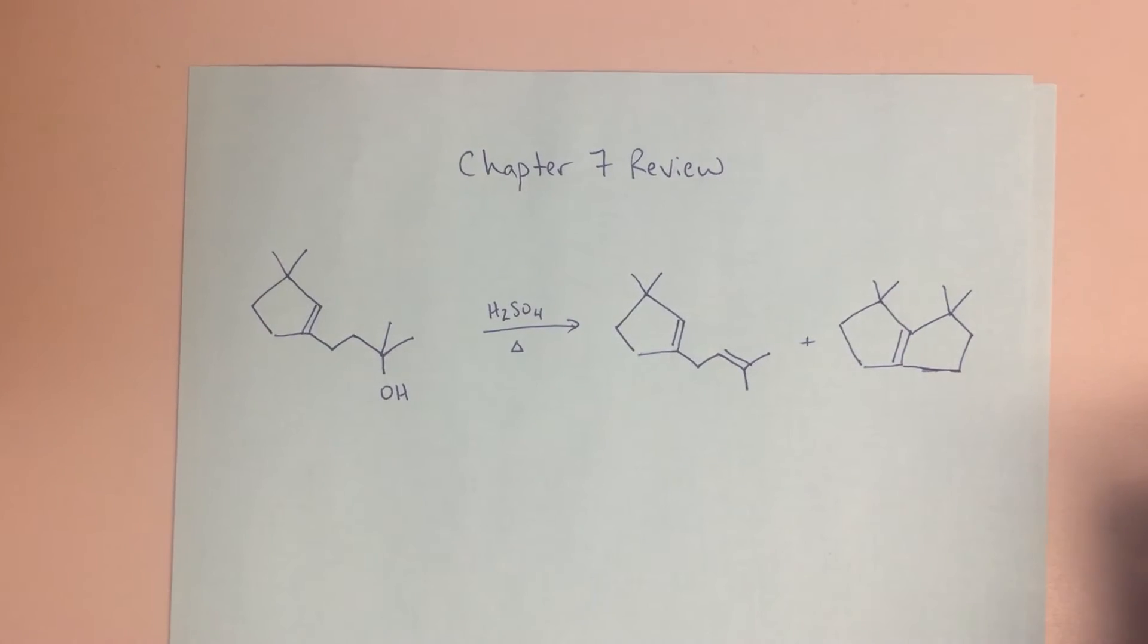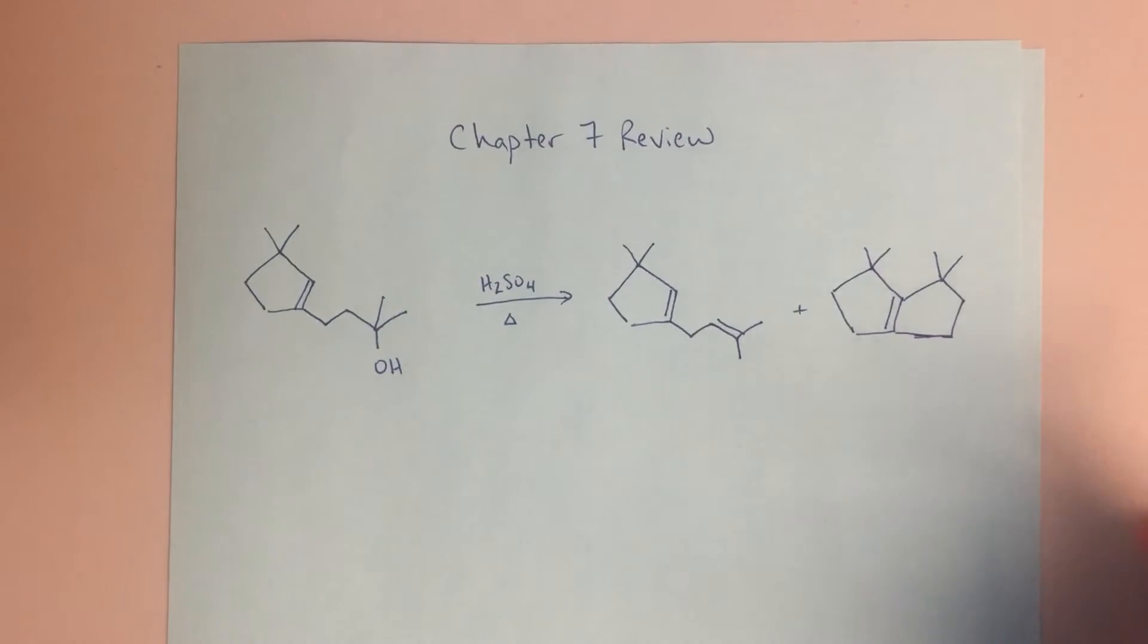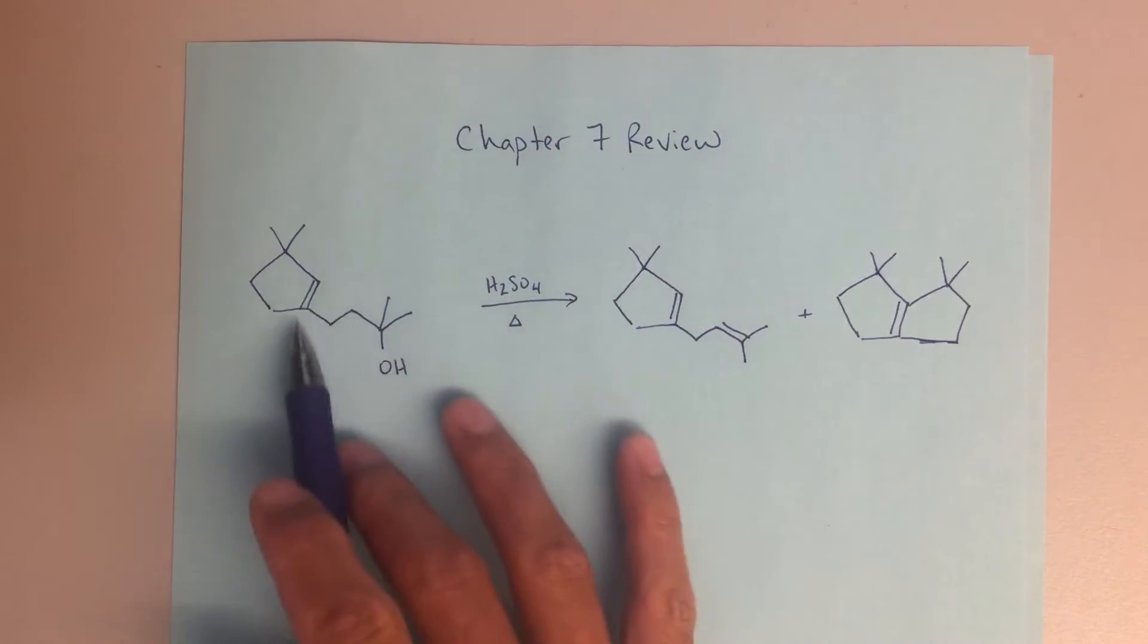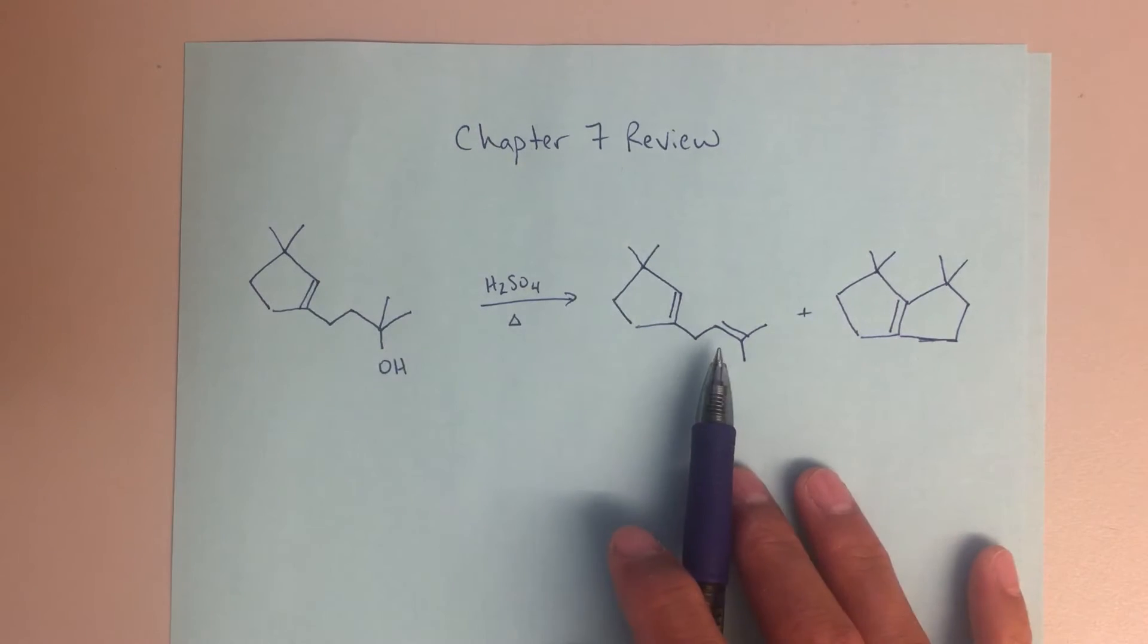Okay, so here is the second part of this review problem that I gave you in class. And here we've got two sort of very different looking products, again the same exercise that I was talking about before in the first video. The thing I'm going to be looking for here is sort of what is happening to go from this starting material to this product.